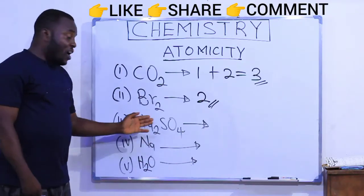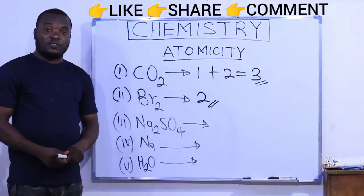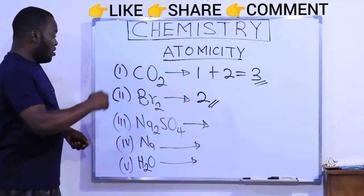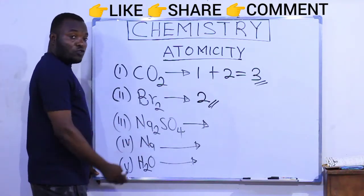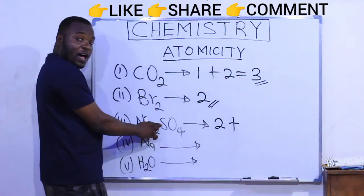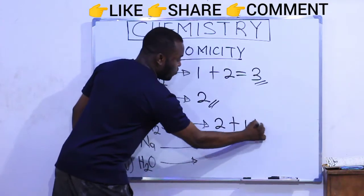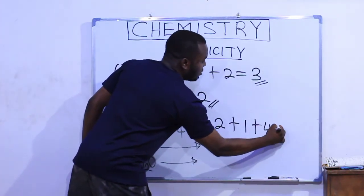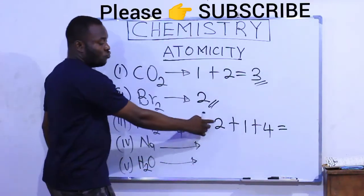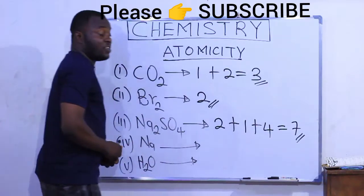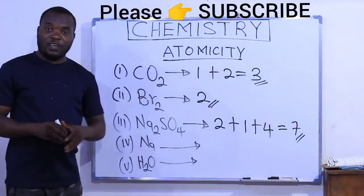The third one says, find the atomicity of sodium sulfate. In this compound, you can see that sodium sulfate is made up of two sodium atoms plus one atom of sulfur plus four atoms of oxygen. That gives us a total of two plus one plus four, which is seven. That is, the atomicity of sodium sulfate is seven.